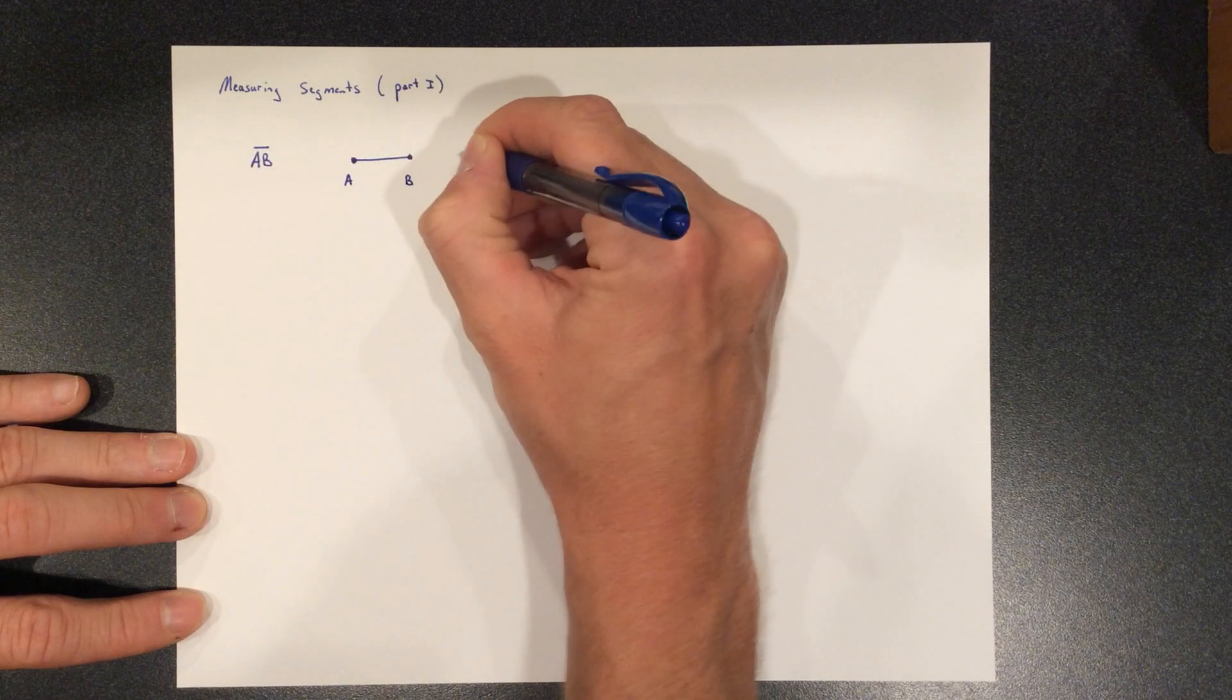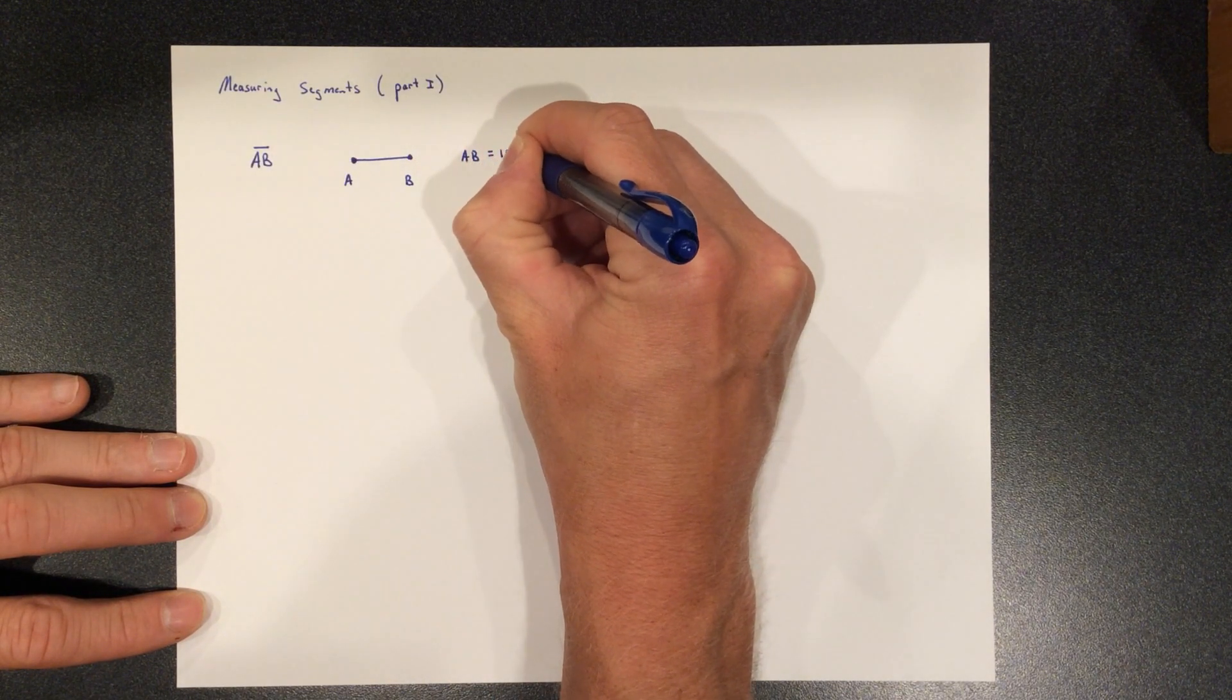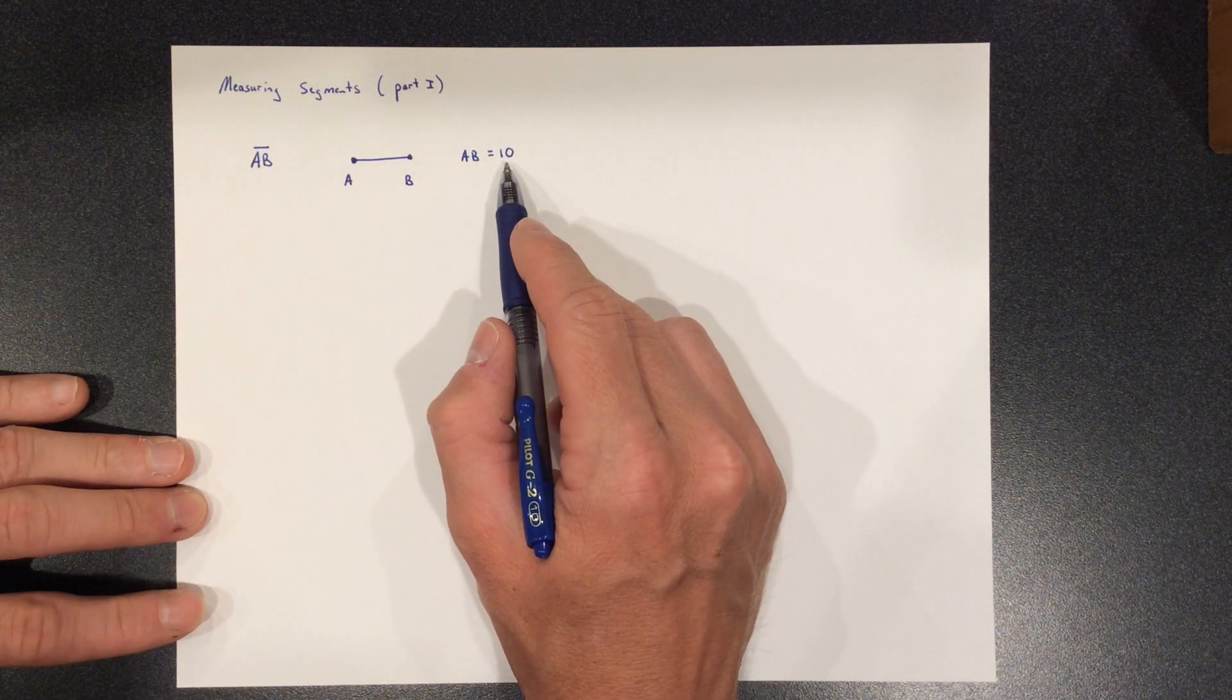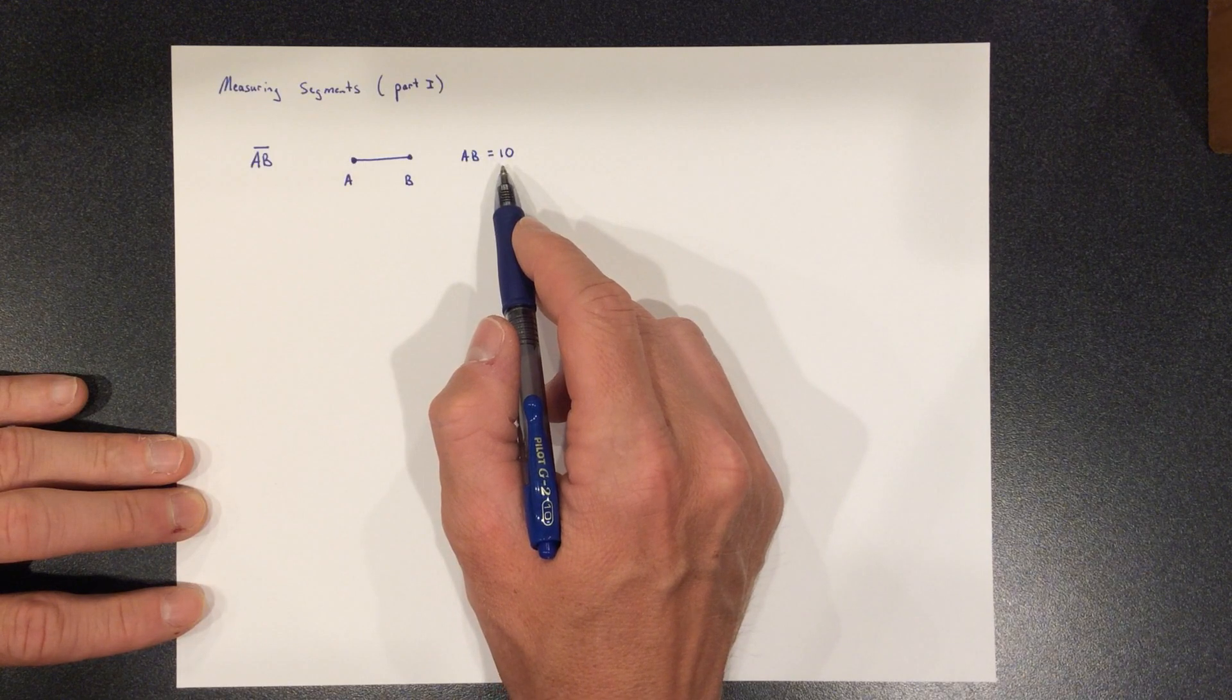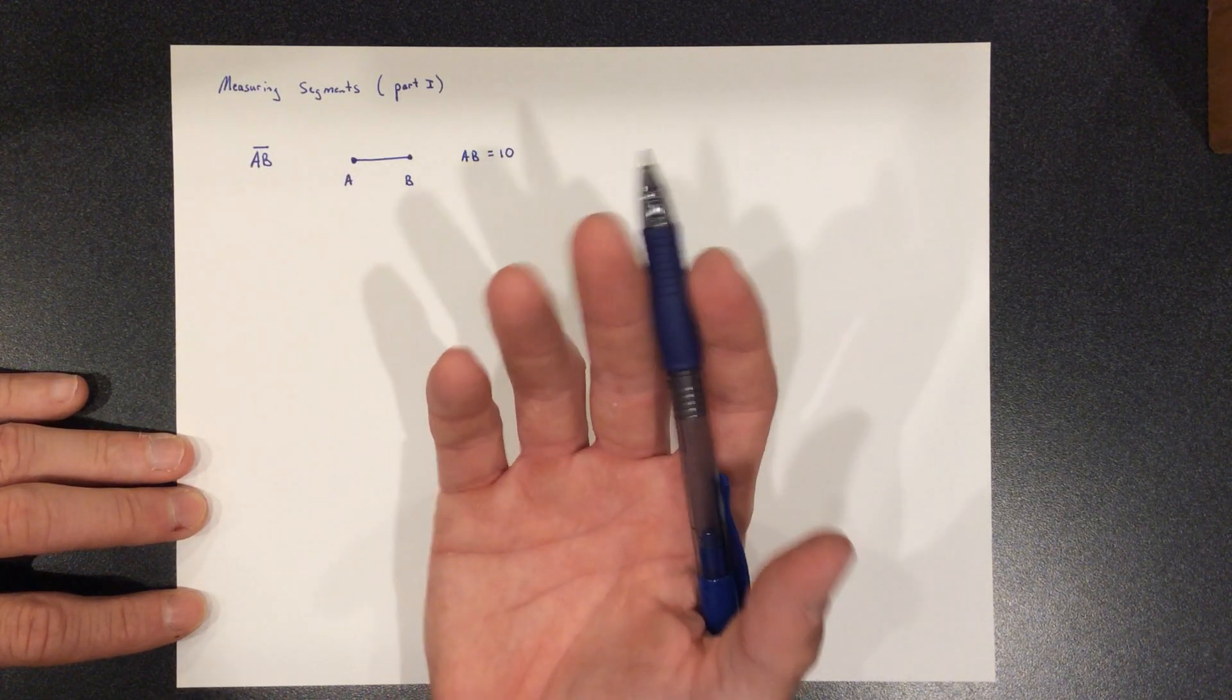And the length of it is something we would say like this. This is line segment AB, and this is the length of line segment AB. So this is an equal sign, with no bar up top. So we can talk about the length of segments, and we can just measure them.